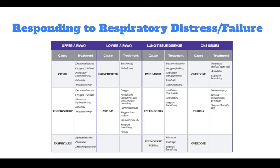For lung tissue disease, if it's pneumonia, treatments include dexamethasone, oxygen, nebulizers, intubation, and tracheostomy. For pneumonitis, it could be antibiotics, nebulizers, and support breathing. For pulmonary edema, you would treat with diuretics, inotropes, and support breathing.